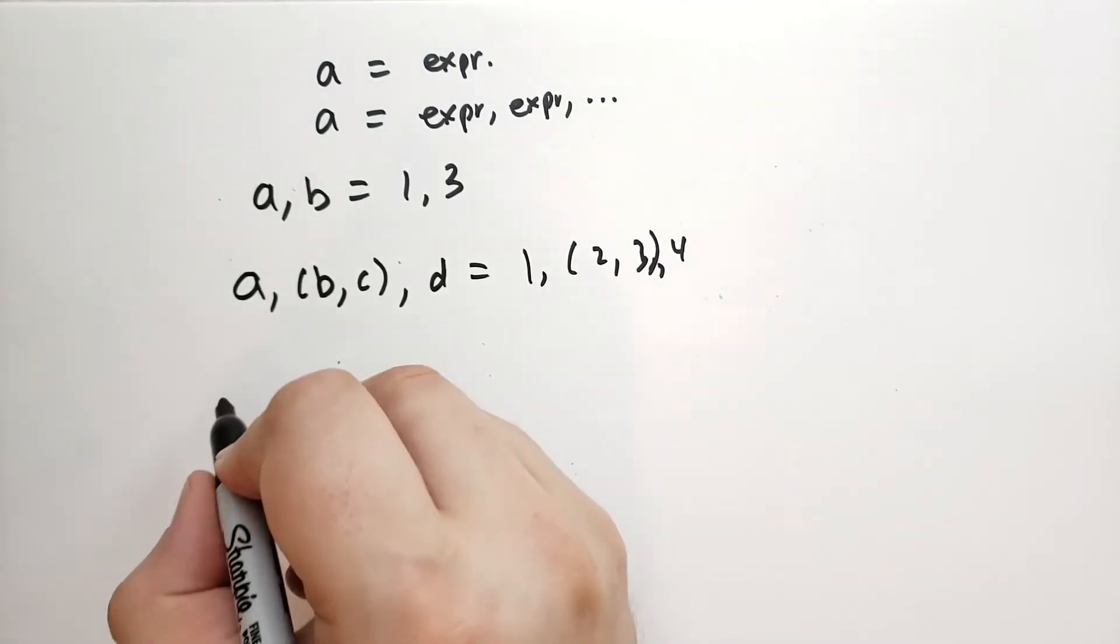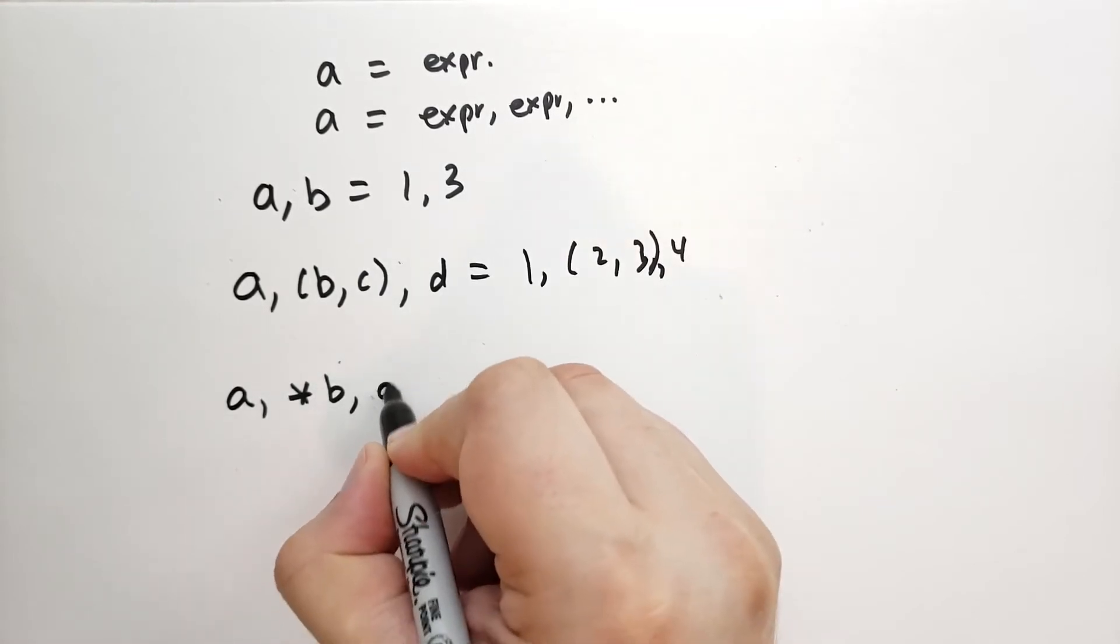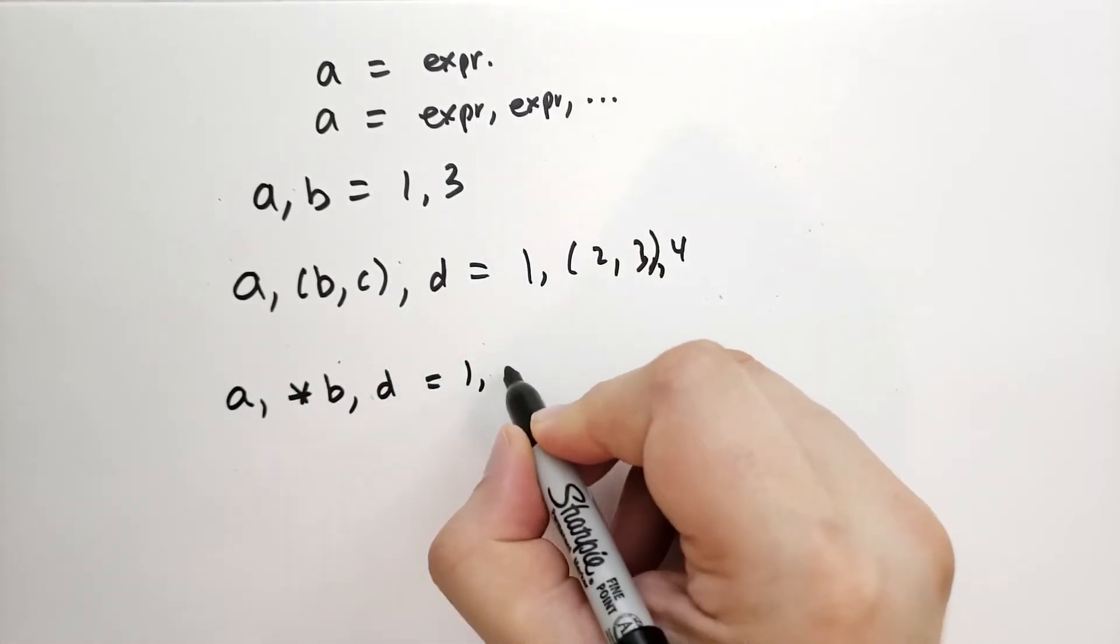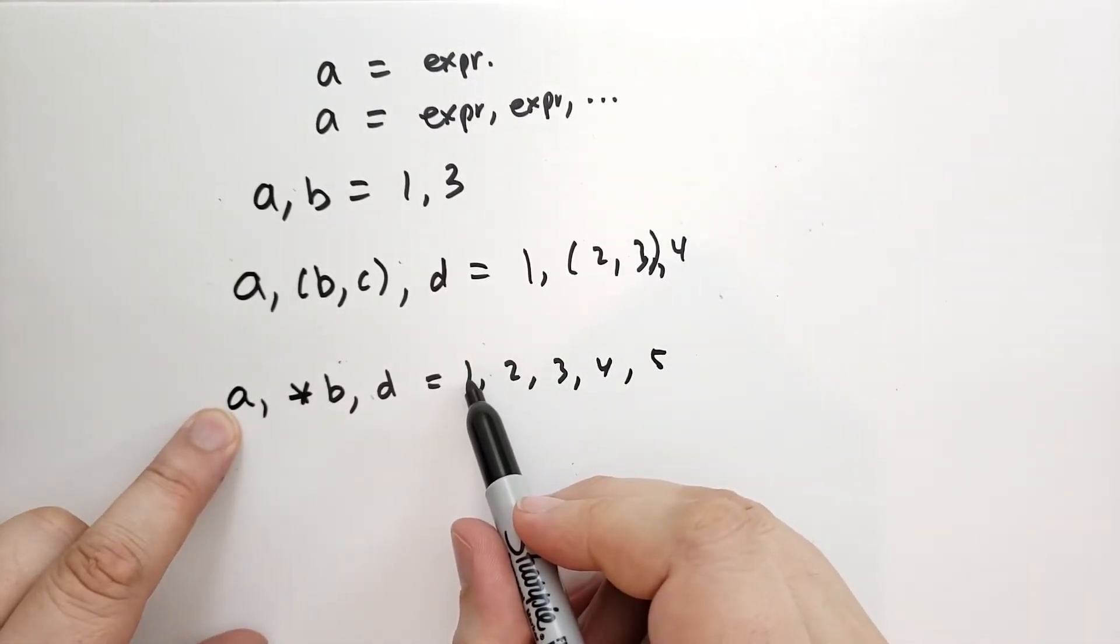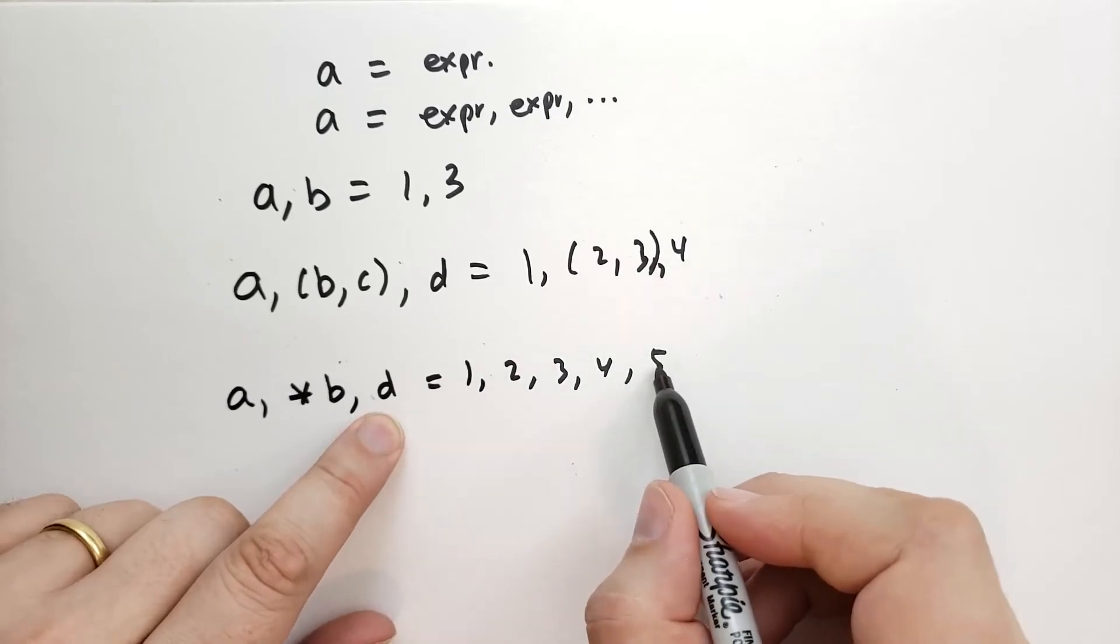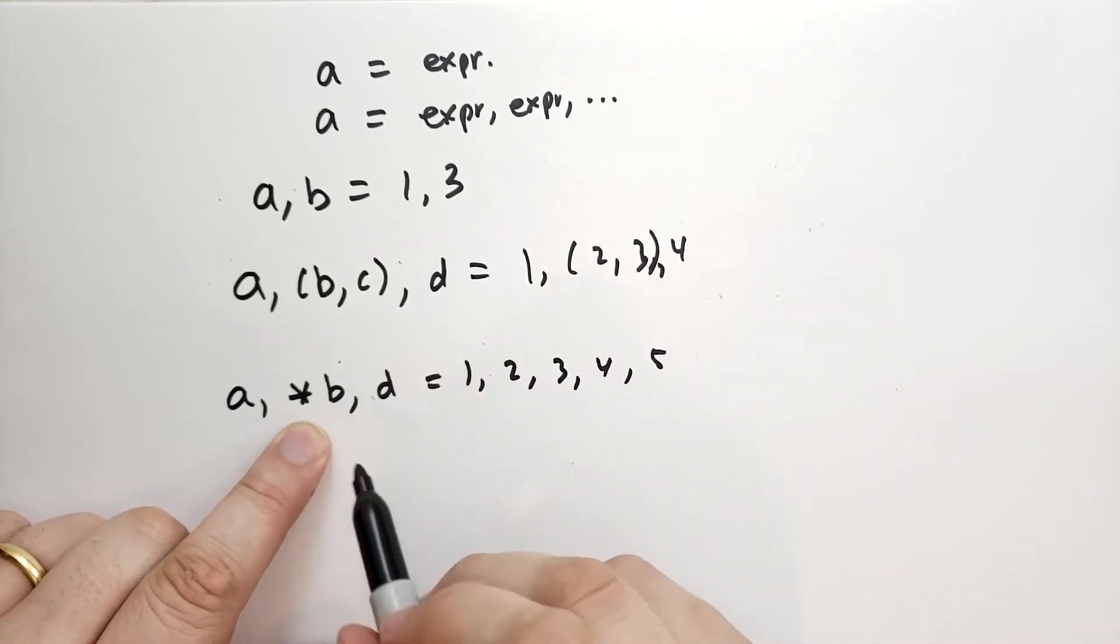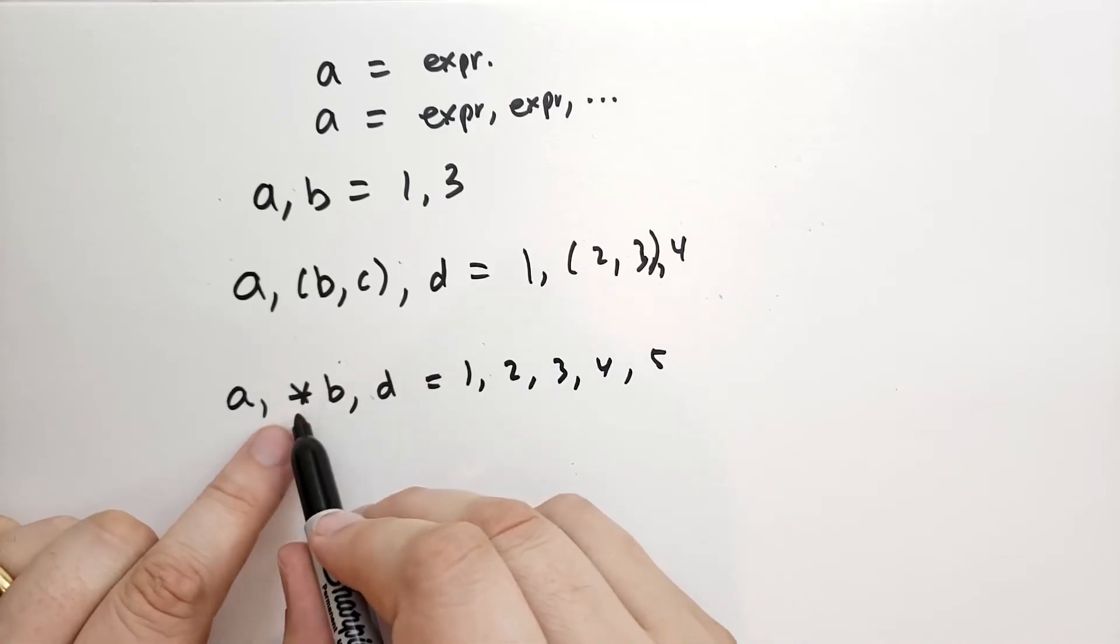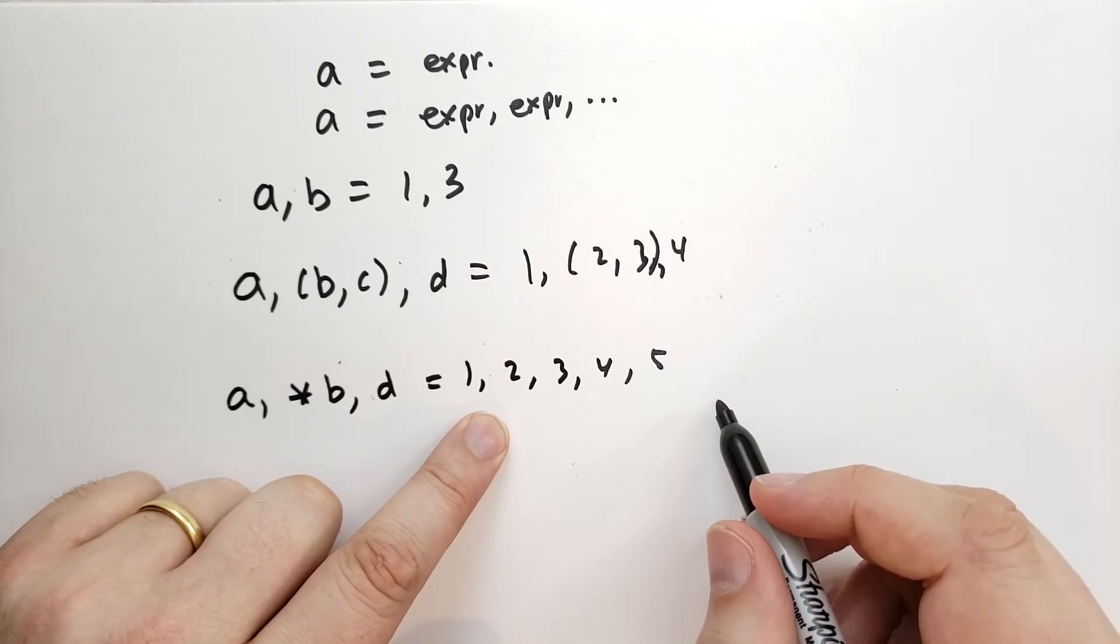Now we can absorb arbitrary numbers of elements by using star on the left side. So a, *b, d = 1, 2, 3, 4, 5. In this case, 1 is going to go to a, 5 is going to go to d, and 2, 3, and 4 are going to be assigned as a tuple to b. Note that you could only have one of these on the left-hand side. You can have as many as you want on the right-hand side.